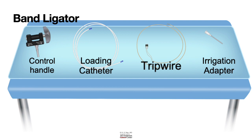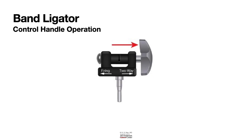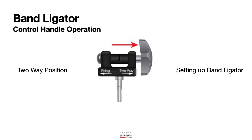Let us learn about the band ligator components. This is the control handle, and as you can see, there are two marks: a two-way mark and a firing mark. If the band ligator is in the two-way position, the wheel can move in both clockwise and anticlockwise directions, which is favorable for setting up the band ligator. It also allows introduction of the endoscope because it does not make the tip stiff.